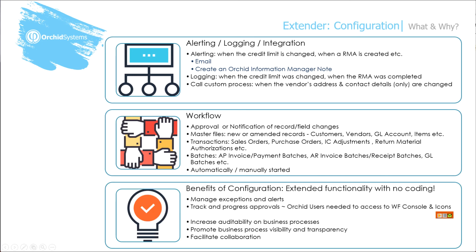All of these workflows, alerting, and logging were done through configuration — no coding required. Using configuration, you can manage exceptions and alerts, track the progress of approvals, and increase auditability on your business processes. Workflow also promotes business process visibility and transparency to all relevant users, and facilitates collaboration without relying on word of mouth. To access the workflow console and icons on the workflow screen, you need to have Orchid users.